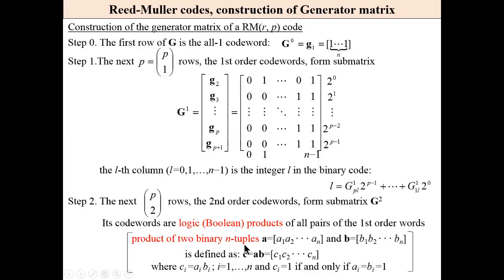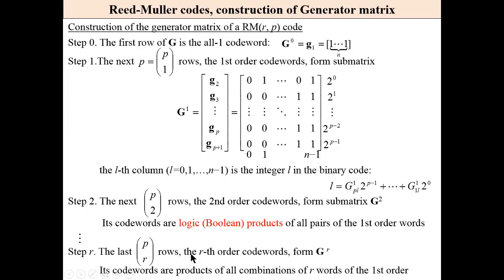Product of two binary N-tuples is a product of bits: 0 multiplied by 1 is 0, only 1 multiplied by 1 is 1. The last rows, the R-th order codewords, form the submatrix GR. Its codewords are all combinations of R words of the first order.